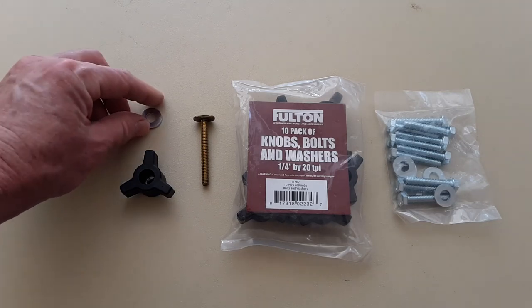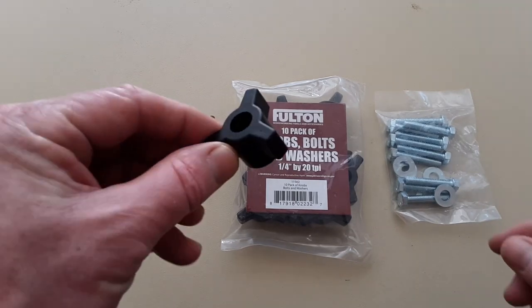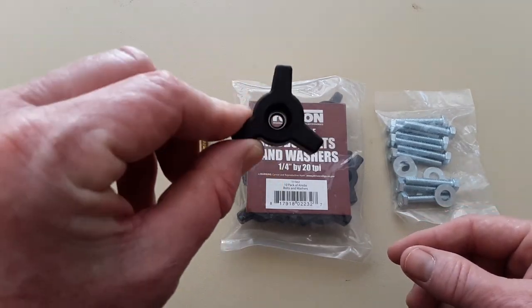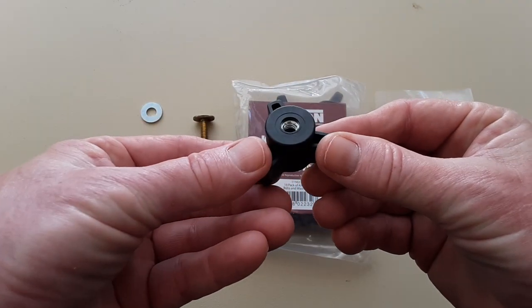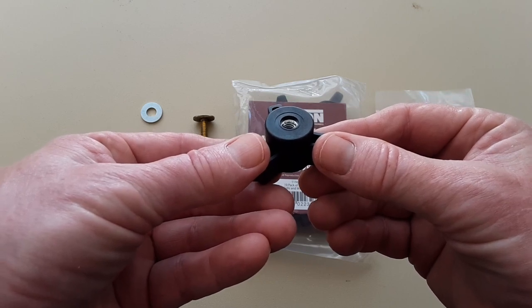But I'm only going to use the washer from the kit and then one of the knobs, as you see here, and it's got a 1 quarter by 20 threaded insert.